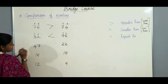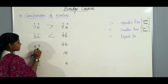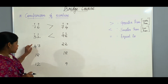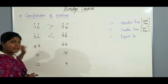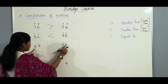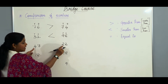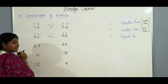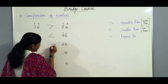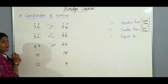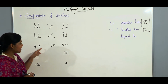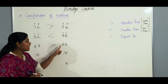Now in the next example we have 47 and 22. Let us try comparing without writing the tens and ones separately. We have 47 and 22, so 4 is greater than 2, making 47 the greater number. We will be reading it as: 47 is greater than 22.